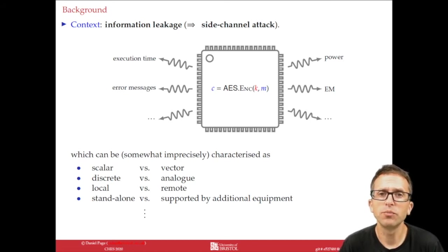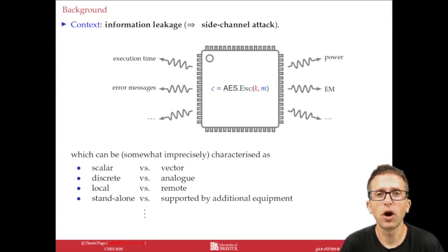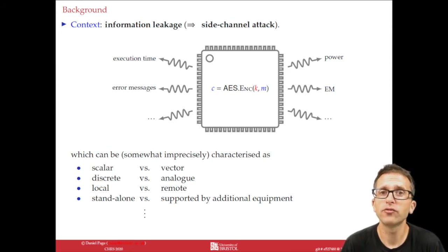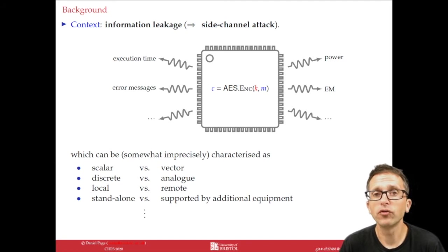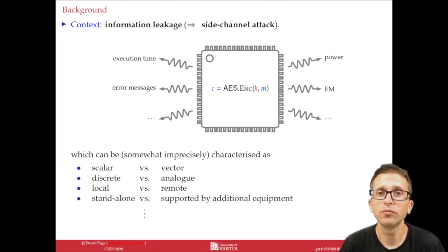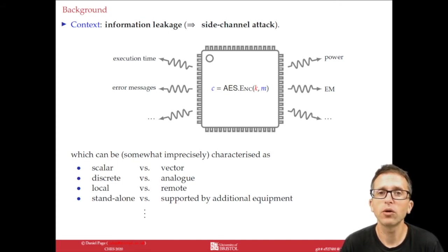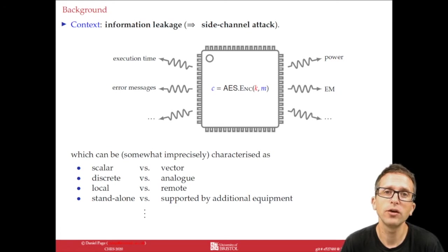We're not so interested in the attacks themselves but rather focused on the underlying source of information leakage and in mitigating or preventing it in some way. The basic idea is that if you have some computation being performed by a target device, then as an attacker, if you monitor this computation the information you can collect goes beyond the by-design API. By monitoring the computation you might be able to capture the execution time, the power consumption, or the electromagnetic emanation. If the computation involves security-critical information, then potentially we gain information about that — for example, the key material K in an AES encryption.